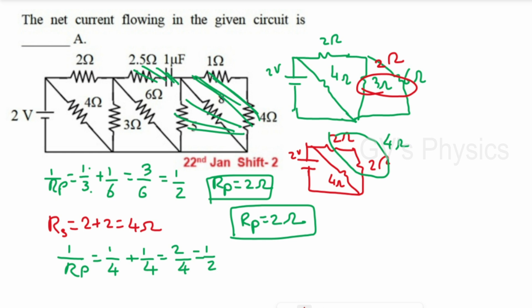Using Ohm's law: I = V/R = 2/2 = 1 ampere. So the current is 1 ampere.